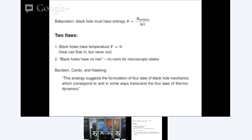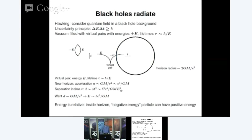When Bardeen, Carter, and Hawking proposed these laws of black hole mechanics, they were very careful to say these aren't thermodynamics. In the early 1970s, Hawking set out to crush this idea once and for all by looking at what happens to quantum fields in a black hole background. What he discovered, to his great surprise, is that once you take quantum mechanics into account, black holes are not really black — that they act as black bodies with a finite temperature and radiate thermal radiation.